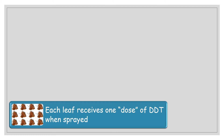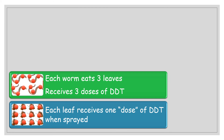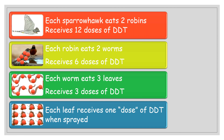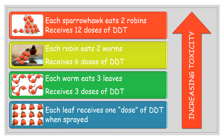If each leaf receives one dose of DDT when sprayed, each earthworm eating three leaves receives three doses. Each robin eating two worms receives six doses. The sparrowhawk eating two robins then receives twelve doses of DDT. Because DDT is not broken down or biodegraded within the food chain, it persists, and as you go up the food chain the levels of dose and toxicity increase.